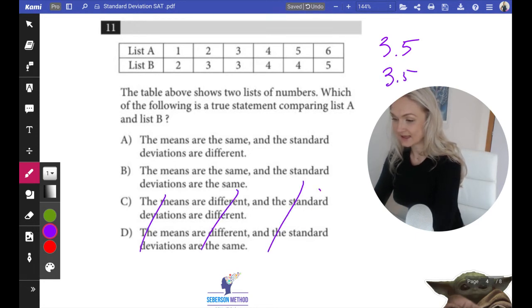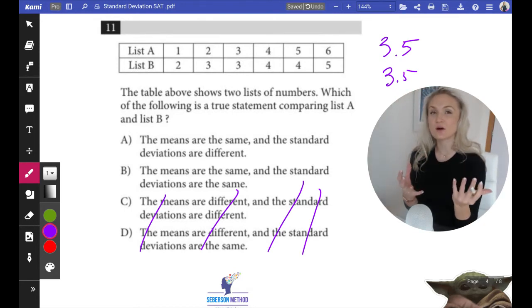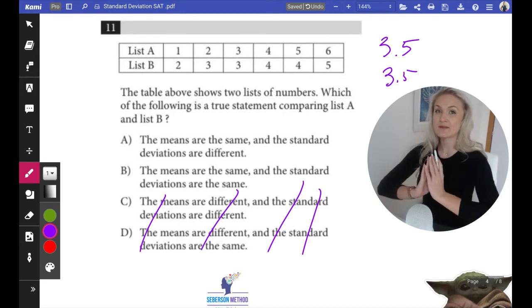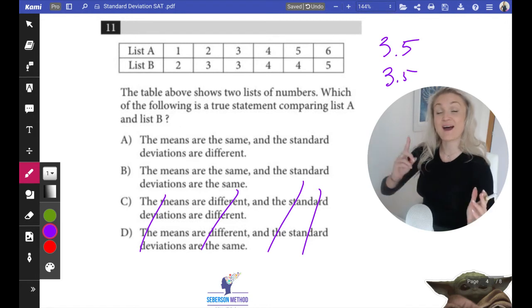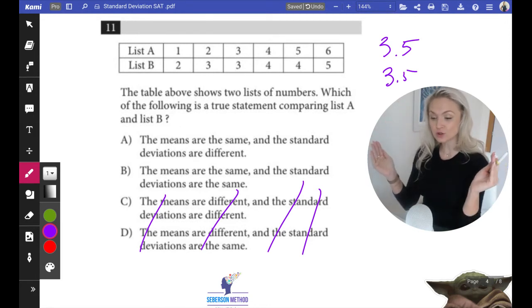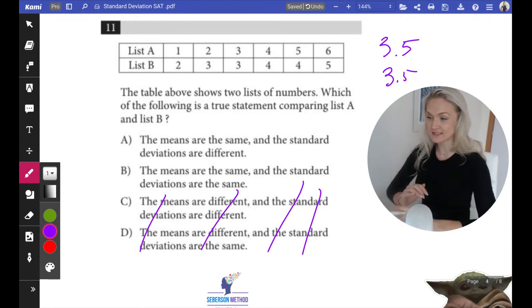C and D is automatically out. Now, standard deviation. And this is where you need to know how to estimate standard deviation. You need to remember that the more spread out the numbers are, the higher the standard deviation. The more close together the numbers are, the lower the standard deviation.